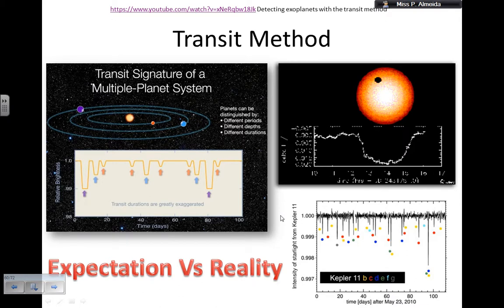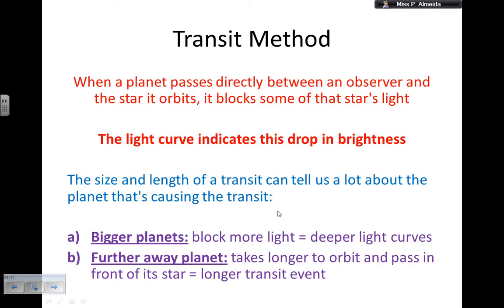And you can also decrease the speed of the video. If you want to see something that is very interesting, how steep this line is, is going to give you an idea of the radius of the planet, which is going to be super important for something else that I'll tell you in a second. So, transit method.